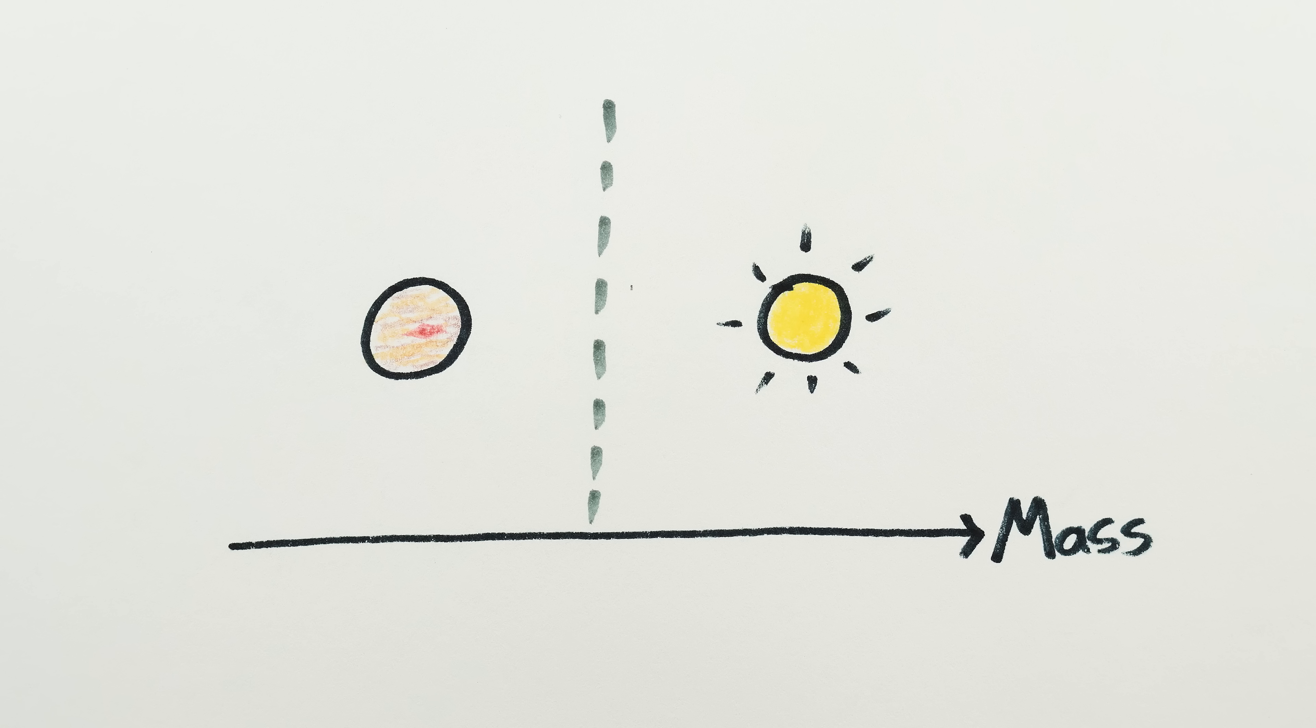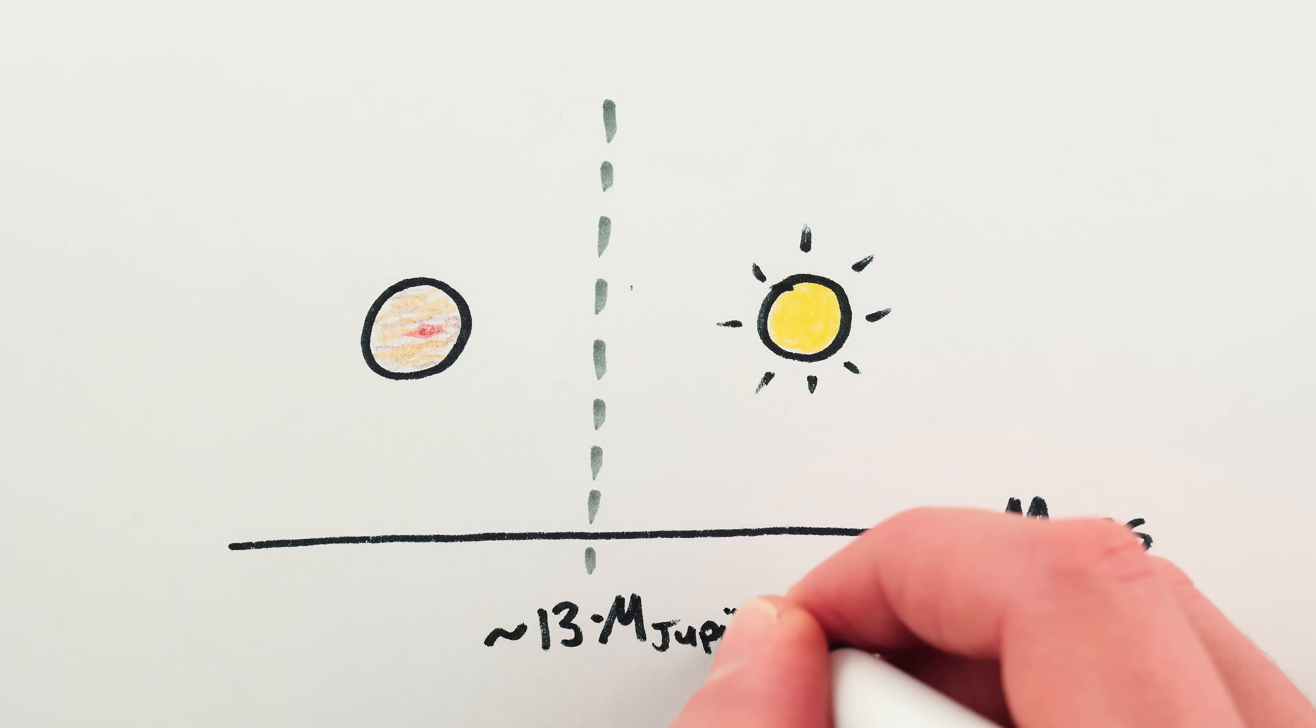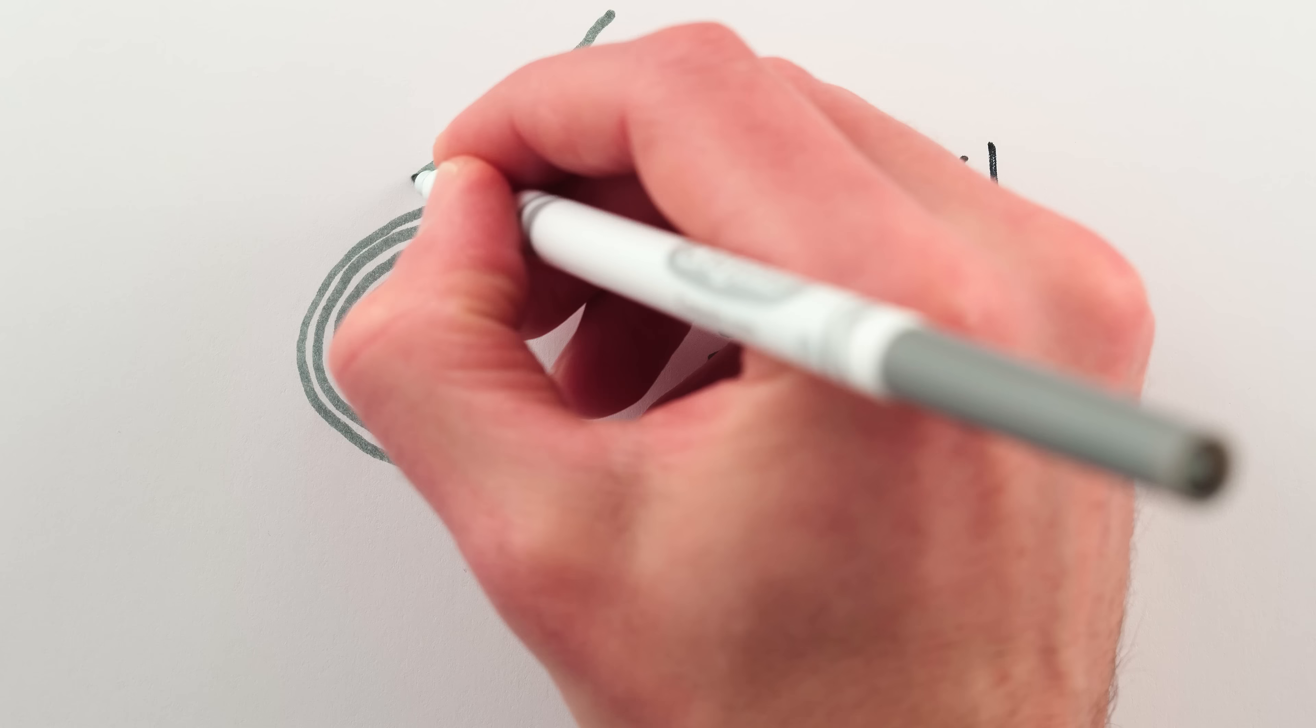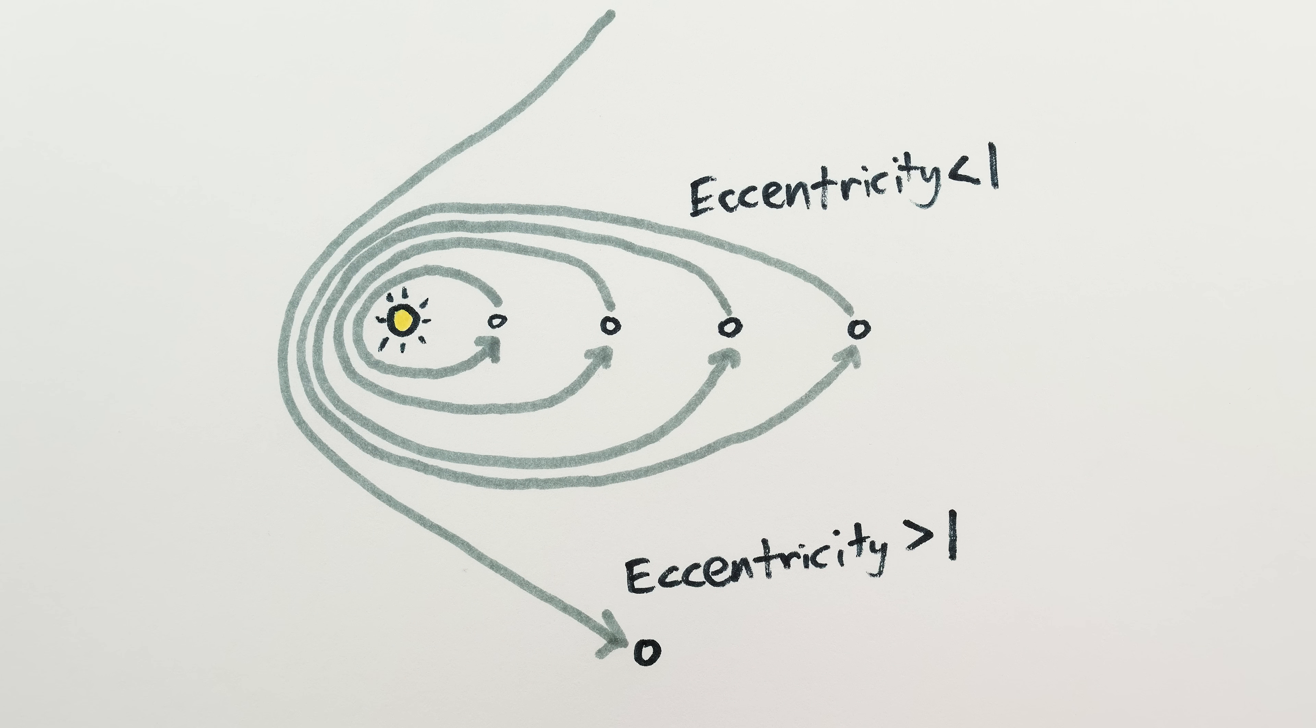This is not like a physically meaningful threshold like the definition for a star, where below a certain mass you can't do fusion, and above it you can, or how, if you take an elliptical orbit where the object returns again and again, and increase the eccentricity above one, it becomes a hyperbolic trajectory where the object will escape, passing by only once.